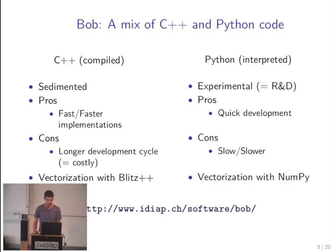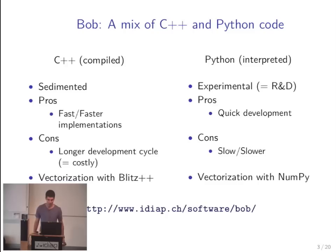We have vectorization for both environments. In C++ we use a library called Blitz++, whereas in Python we use NumPy. Today I'm only going to speak about the Python part, which is what you would use if you want to use the Bob library. If you really want to optimize and integrate code within Bob, you would need to do some C++ development, but I'm not going to talk about that today.